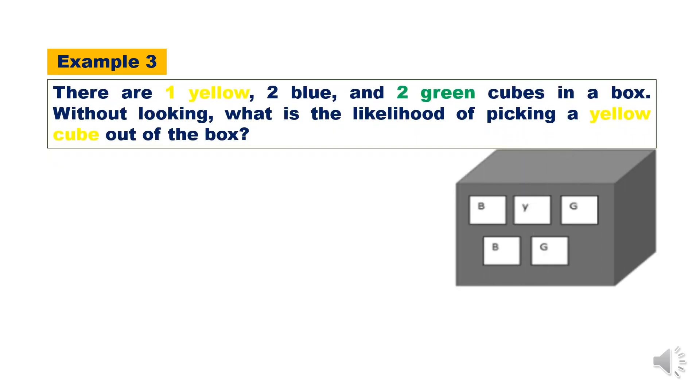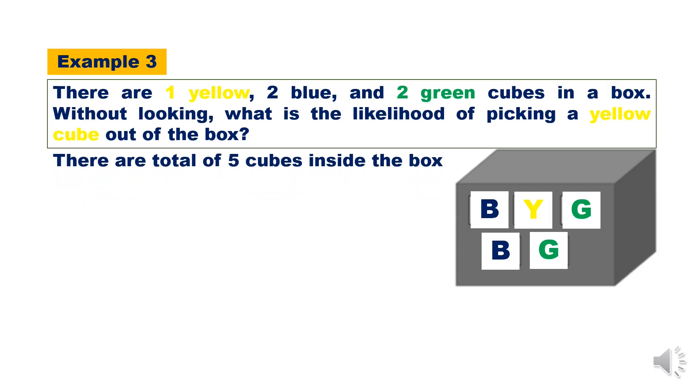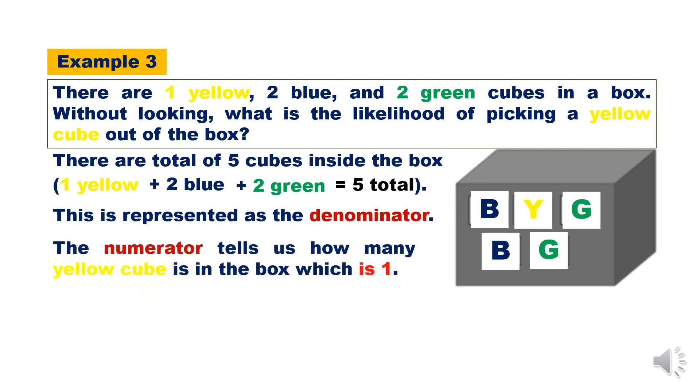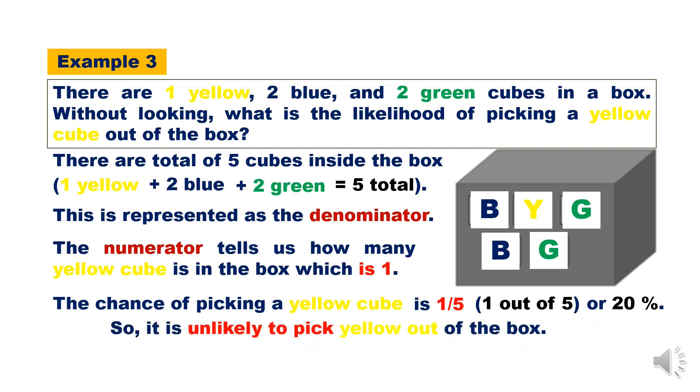Example 3. There are 1 yellow, 2 blue, and 2 green cubes in a box. Without looking, what is the likelihood of picking a yellow cube out of the box? There are total of 5 cubes inside the box: 1 yellow plus 2 blue plus 2 green equals 5. This is represented as the denominator. The numerator tells us how many yellow cubes is in the box, which is 1. The chance of picking a yellow cube is 1 fifth, or 1 out of 5, or 20%. So it is unlikely to pick yellow out of the box.